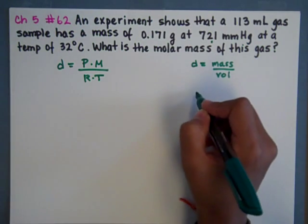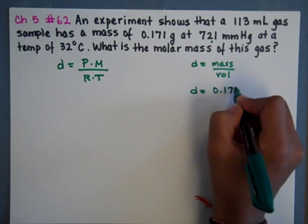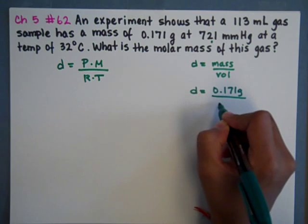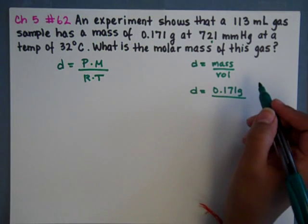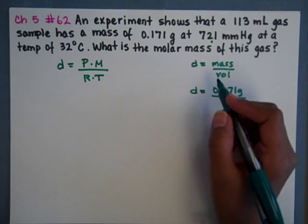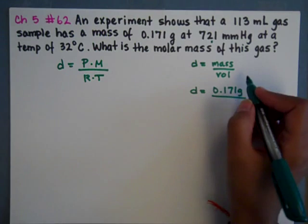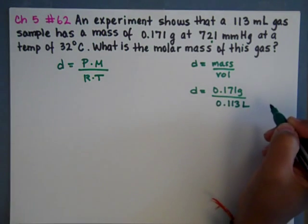The first thing we're going to do is find the density, and that's going to be the mass over the volume. In PV equals nRT formulas, gas law formulas, we want the volume to be in liters because that is what our R value has in its units. So we need it to be 0.113 liters.